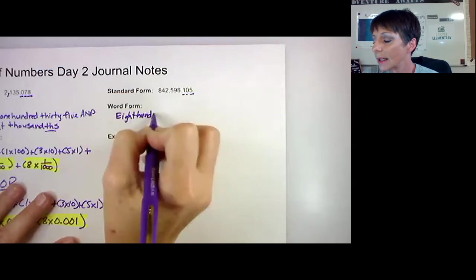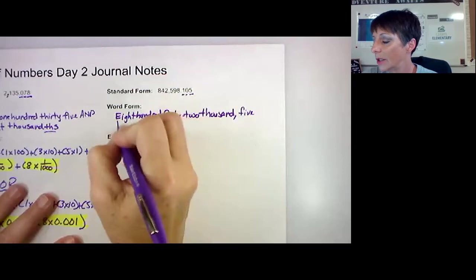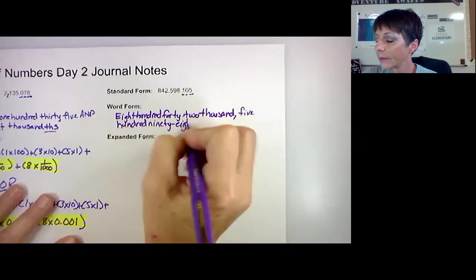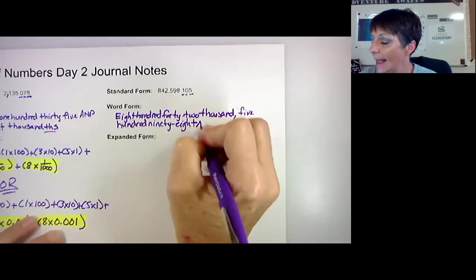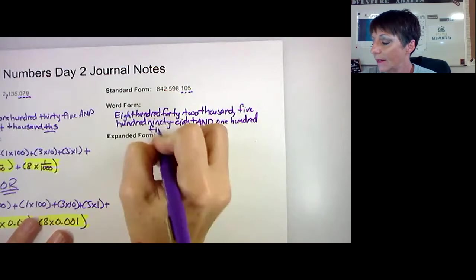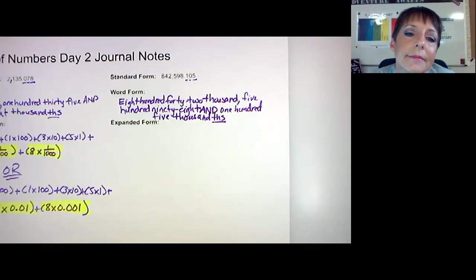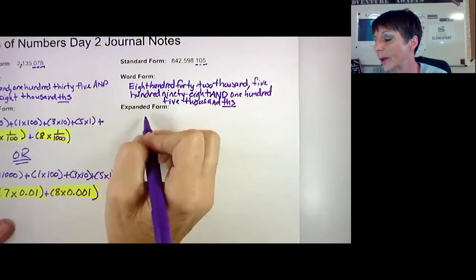Here we go, get ready to write. Eight hundred forty-two thousand, and then I'm putting a comma because there's a comma in the number, 598, and then the decimal. The word for decimal is 'and', right? So let's write 'and', and then I'm just going to write this the way it sounds, 105, but it lands in the thousandths place. So 105 thousandths, and don't forget to put the THS on. That's important because that tells me decimal. Please turn your TV to channel 94 for this morning's edition of the Compton News Network.